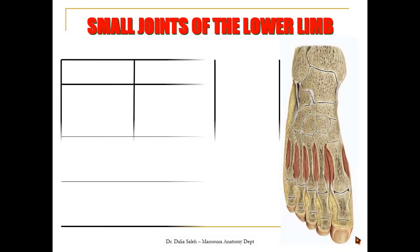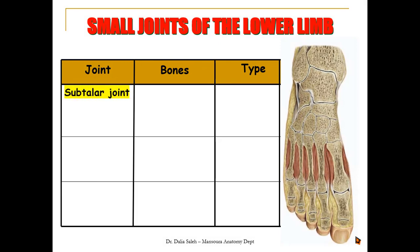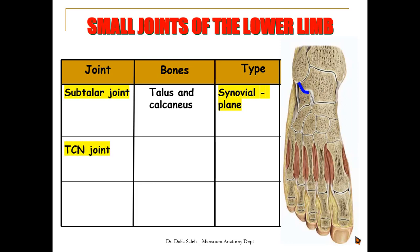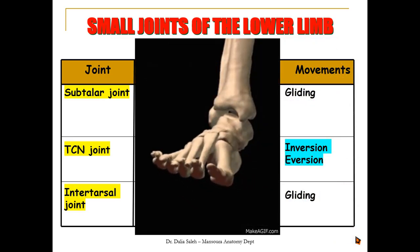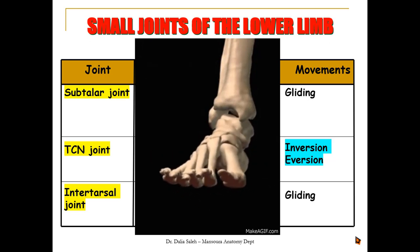In the foot we have the subtalar joint, made by the articulation of the talus and calcaneus — a synovial plane joint. We also have the talocalcaneonavicular joint, made by the articulation of the head of the talus with the calcaneus and the navicular bone — it is a synovial ball and socket joint. We have intertarsal joints between the surfaces of the different tarsal bones, also synovial plane joints, which allow gliding or sliding movements. The talocalcaneonavicular joint allows inversion and eversion of the ankle: inversion is performed by tibialis anterior and posterior, while eversion is performed by the peroneal muscles.